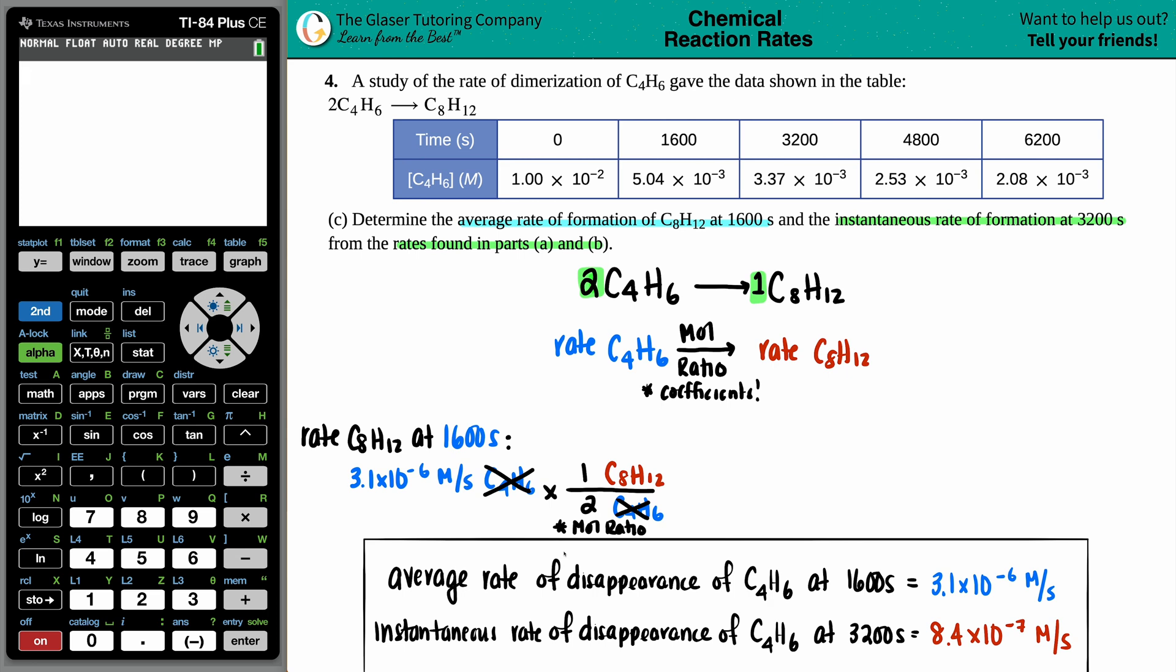The reason we can do this is because inside a molarity is the unit mole. That's why we can use the mole ratio, because moles are hidden in the molarity, so it's fair game. All we have to do is just take this value and divide by 2. 3.1 times 10 to the negative 6 divided by 2, and there it is: 1.55 times 10 to the negative 6 molarity per second of the C8H12. This is the rate of formation of the C8H12 at the 1600.